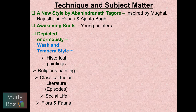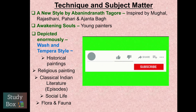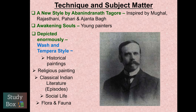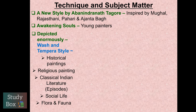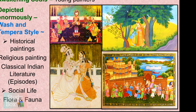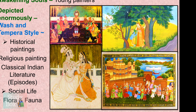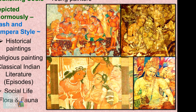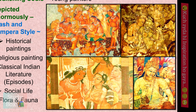Now we will start with technique and subject matter. You can see a new style by Abanindranath Tagore. E.B. Havell motivated Abanindranath Tagore, who took inspiration from Mughal, Rajasthani, and Pahari paintings, and also from Ajanta. His inspiration and his new paintings would awaken young painters' souls to make paintings.